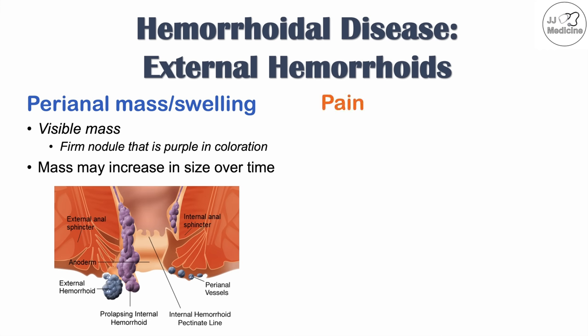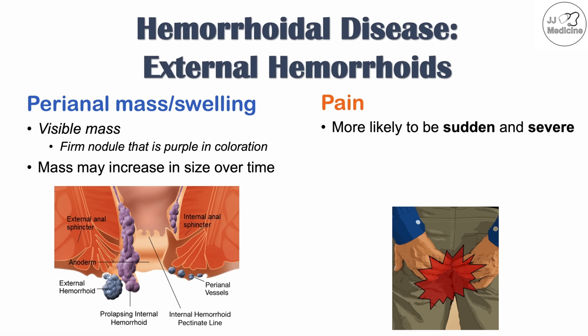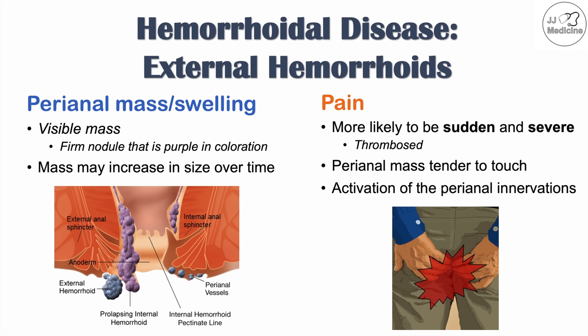Another important symptom of external hemorrhoids is pain, which is more likely to be sudden and severe. This is more likely when the external hemorrhoid has become thrombosed — when a clot forms, that perianal swelling becomes tender to touch. External hemorrhoids are more likely to cause severe pain because irritation activates perianal innervations that are closely located near the external hemorrhoids.